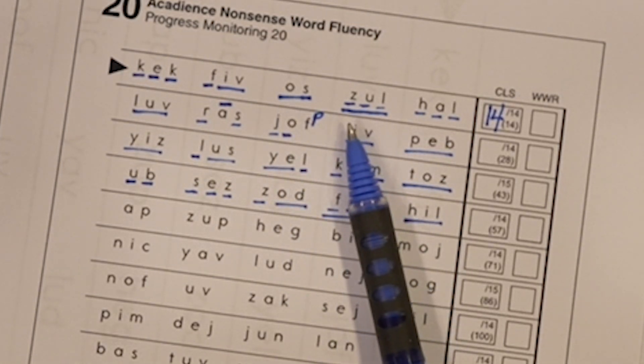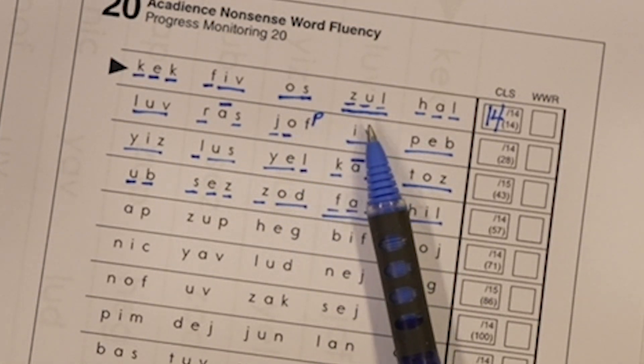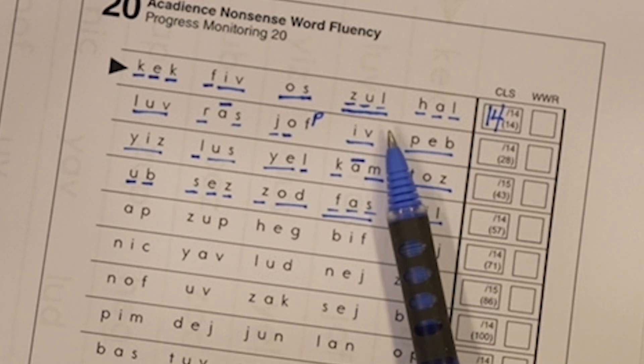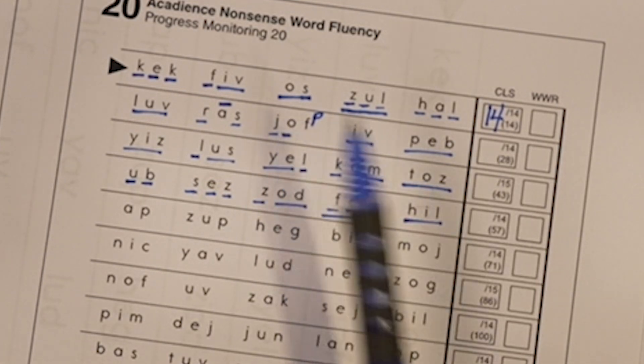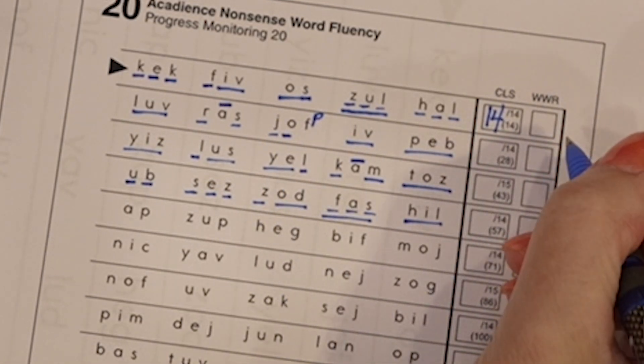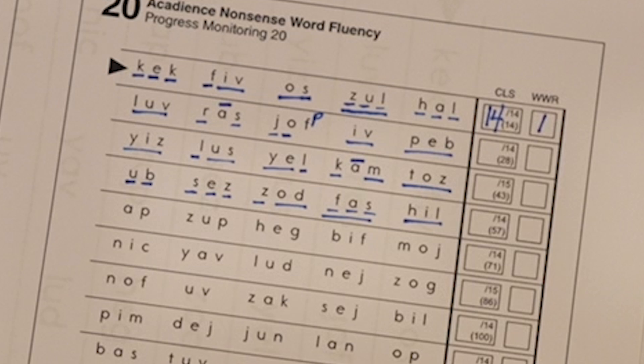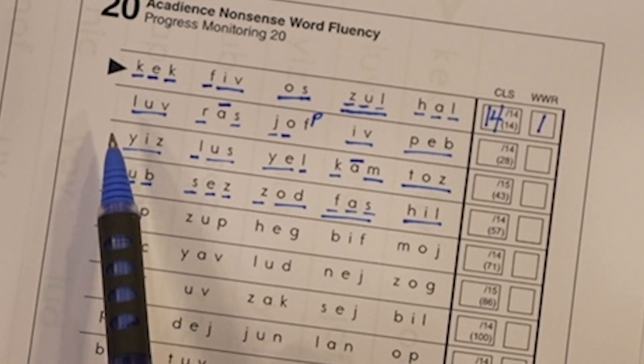So with Zul, we sounded it out first, Z-U-L. Then we blended it into a whole word Zul. I can't give them credit for a whole word read for that, but I can give them OS. So whenever it is the whole word read the first time, I give credit.